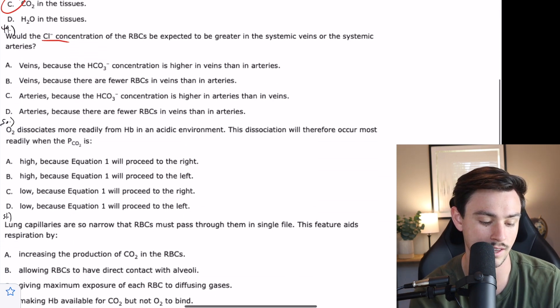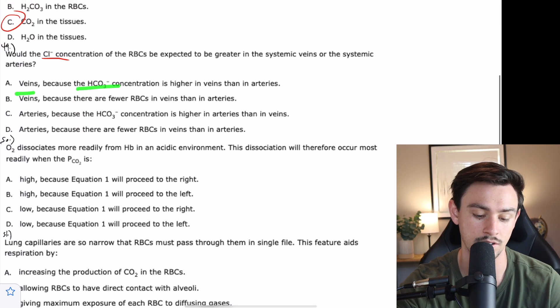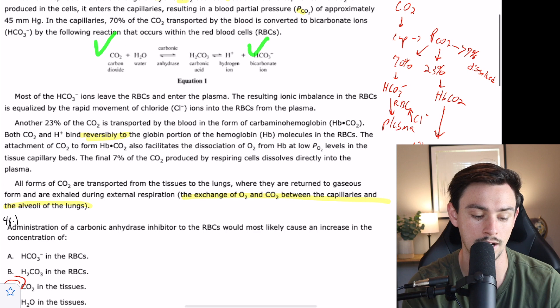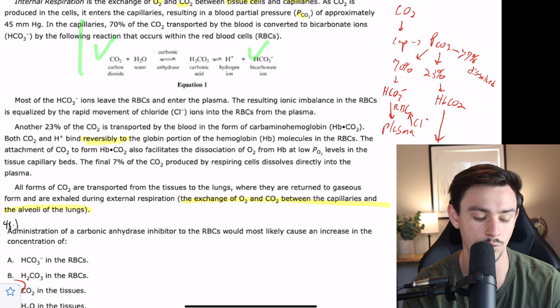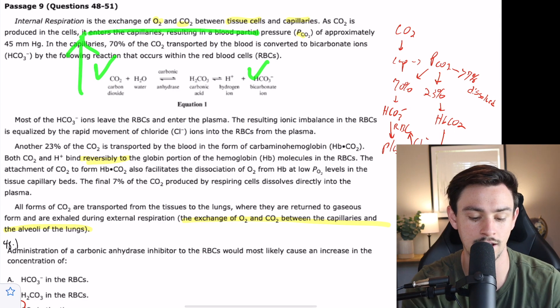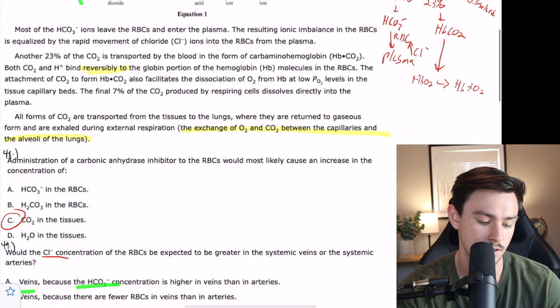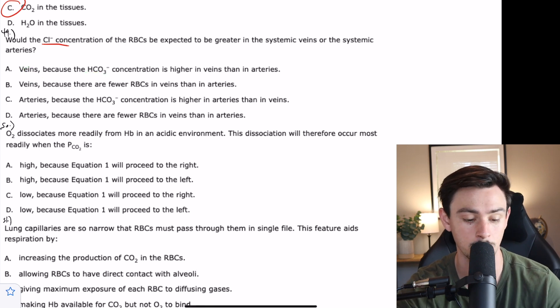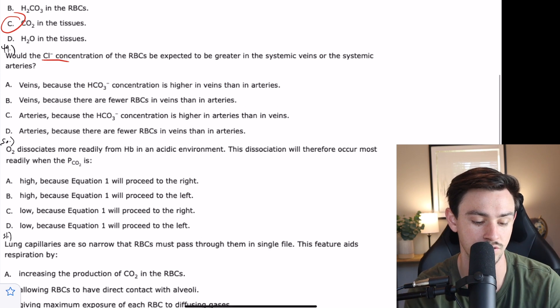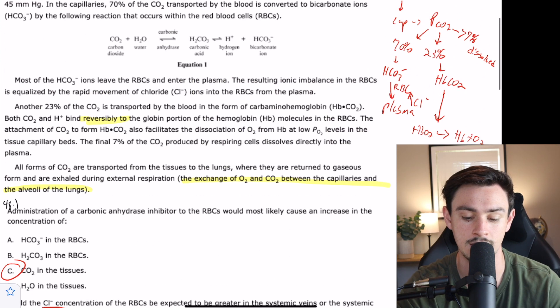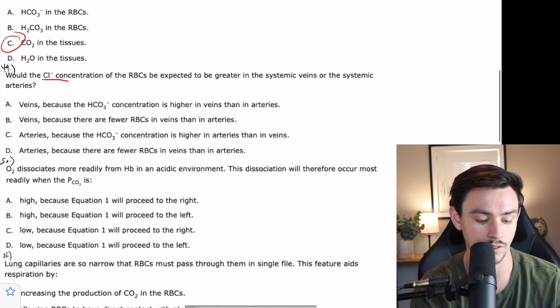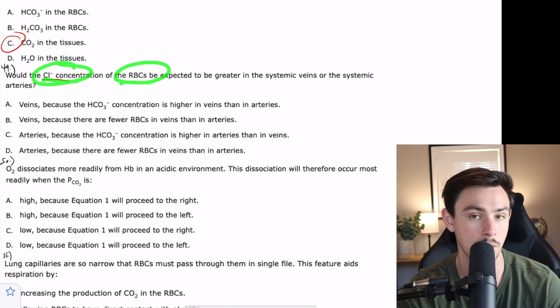If the CO2 is higher in veins, then the bicarb is also going to be higher in veins, because Le Chatelier's principle says that if we raise this side of the equation, it's going to drive the reaction to the right. If we have a lot of bicarb in the veins, then that's going to cause a large exchange of the chloride and throw it into the red blood cells. That would actually answer this question perfectly. So we'll say maybe to A.